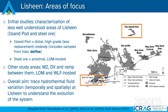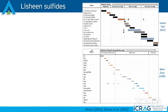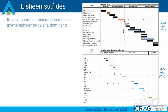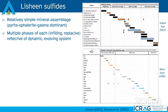The overall aim of this Lachine-based study was to look at hydrothermal fluid variation both temporally and spatially at Lachine, to understand the full evolution of the system. The mineralogy of Lachine is relatively simple — we get quite a lot of pyrite, sphalerite and galena — however there are multiple phases of each, with infilling and replacement reflective of a dynamic and evolving system. Generally we get a progression from iron-dominated to zinc-lead-dominated, corresponding to an increase in hydrothermal activity.